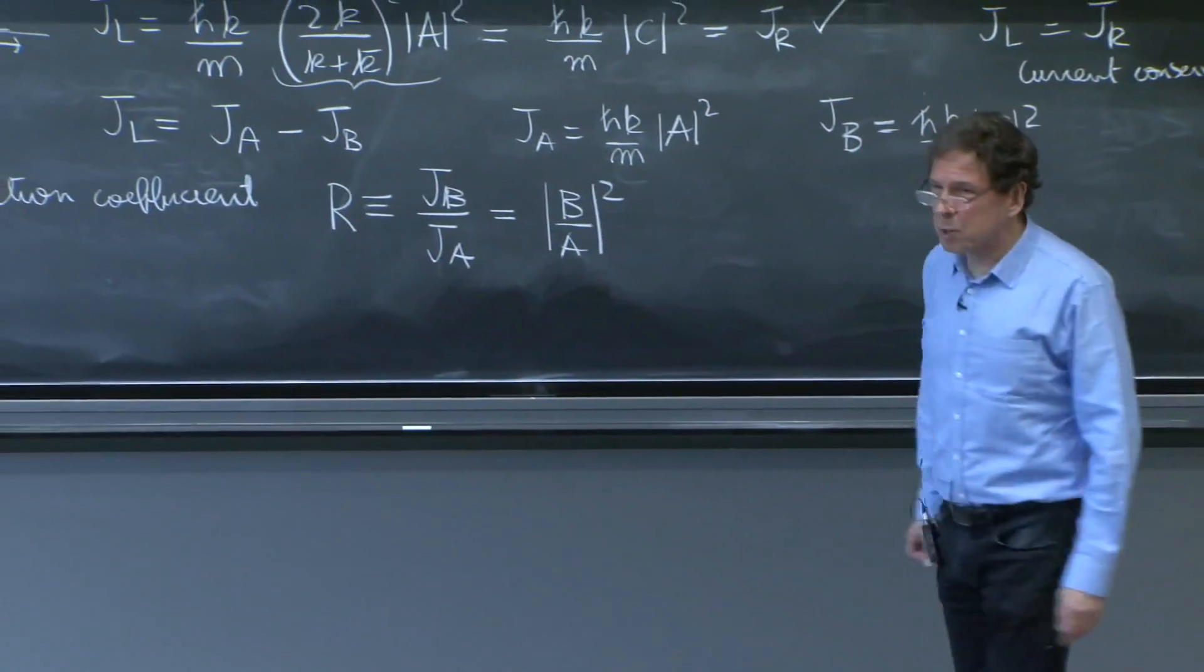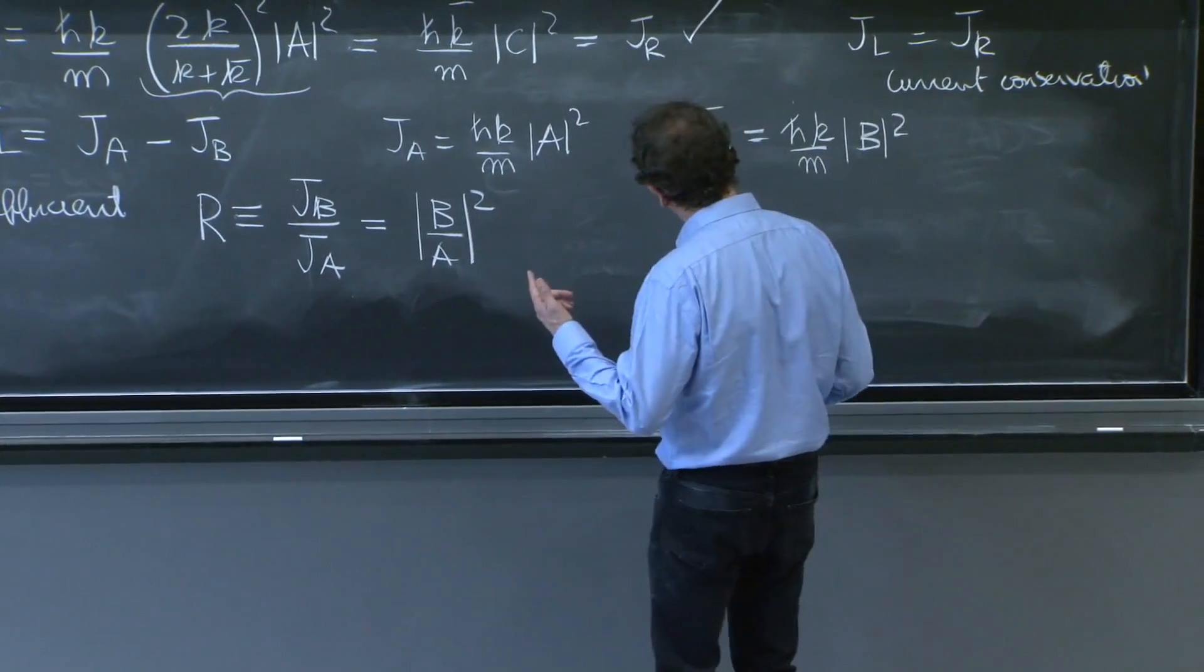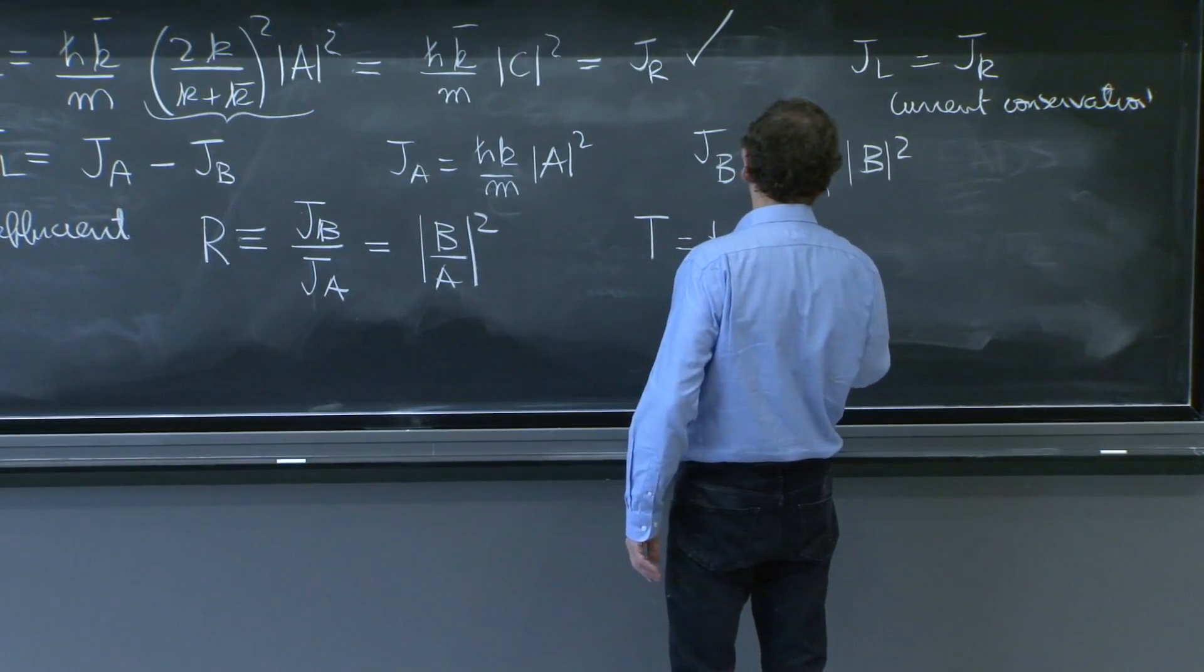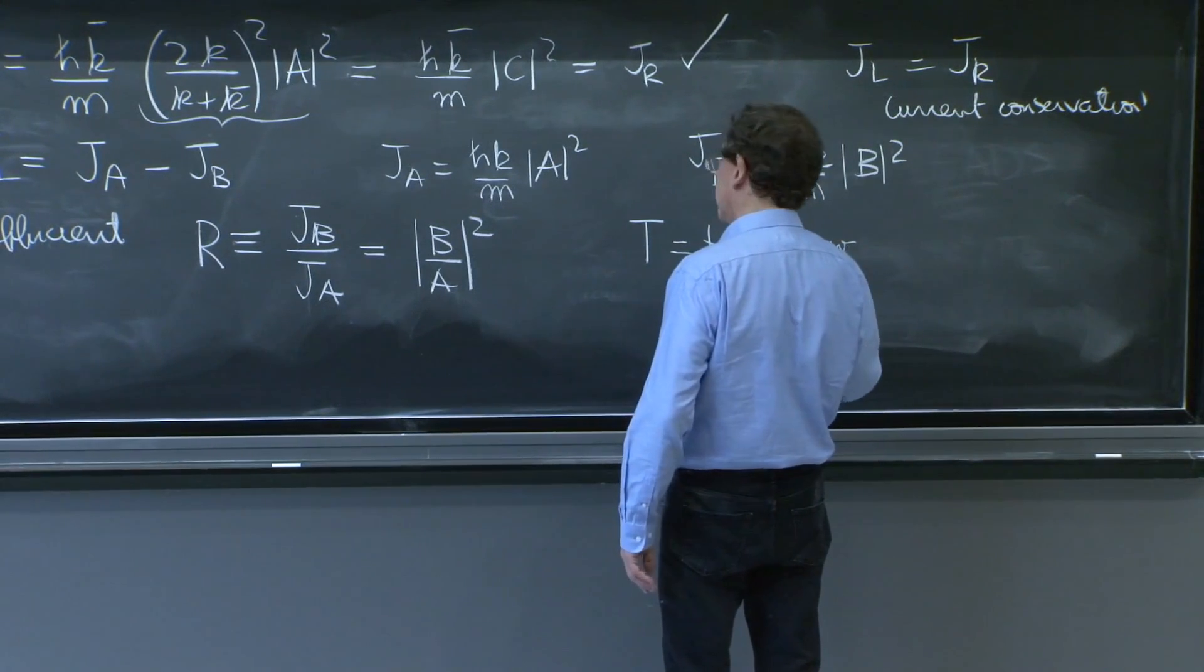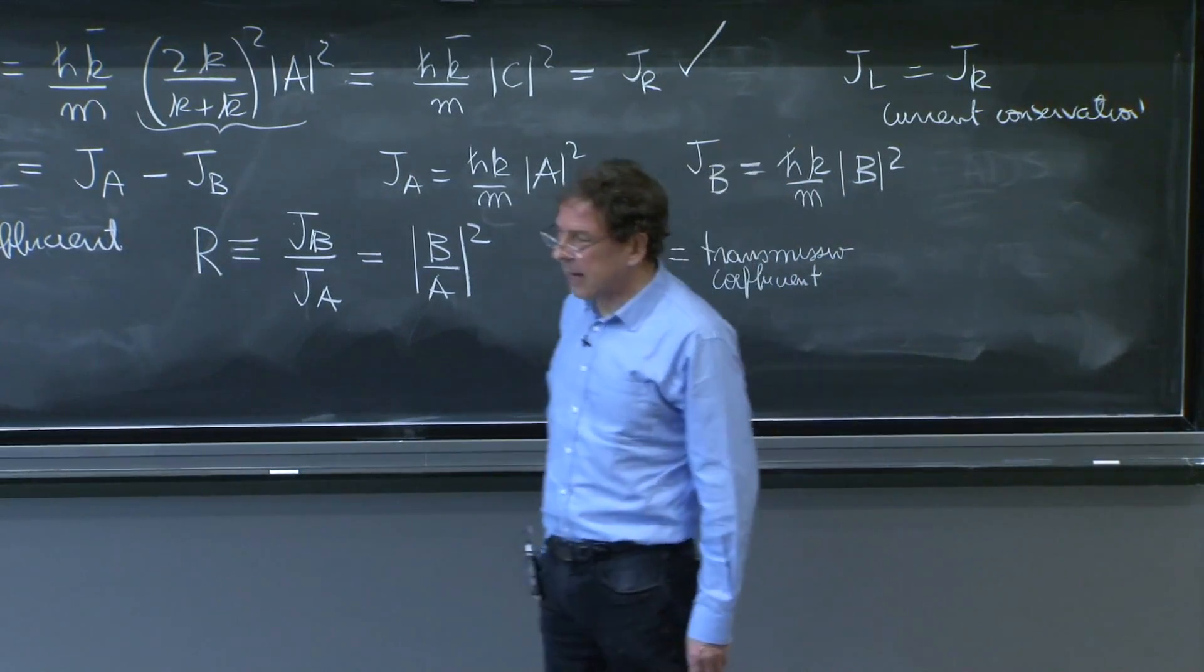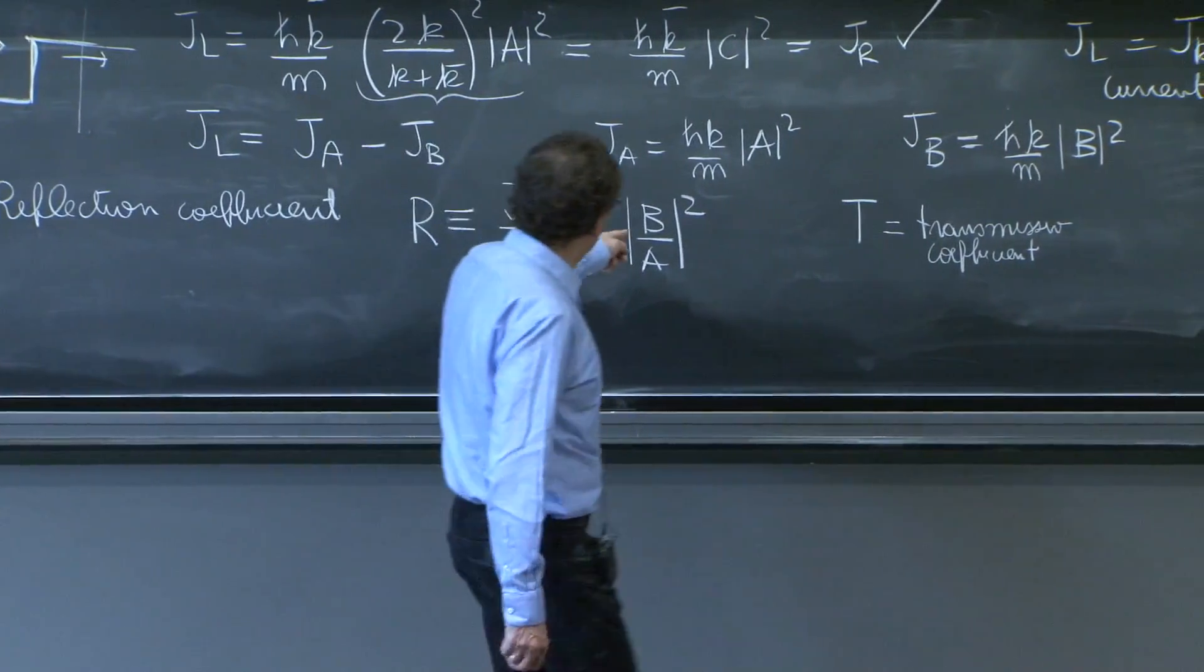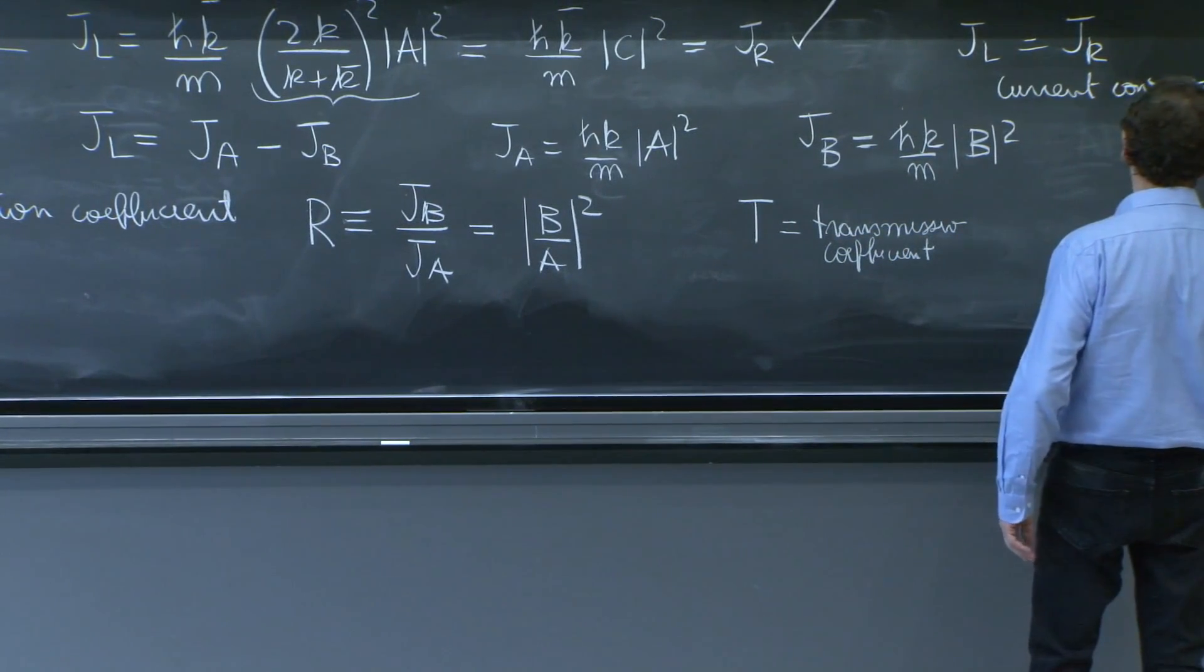Now we could have a transmission coefficient as well. And here is something that we sometimes make a mistake. T is going to be the transmission coefficient. And how should we define it? There is a temptation to define it. Well, the coefficient b over a gives me this. Then maybe, should it be c over a?